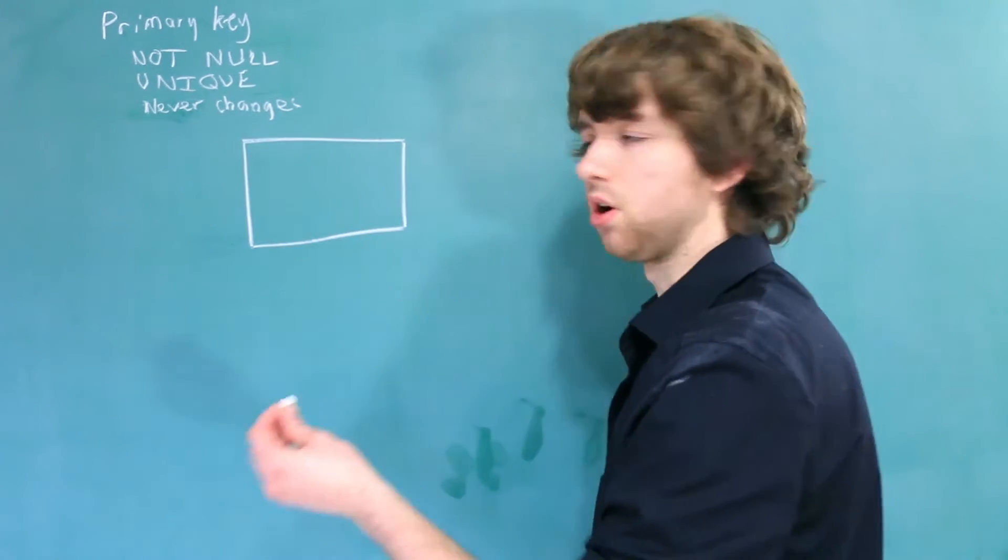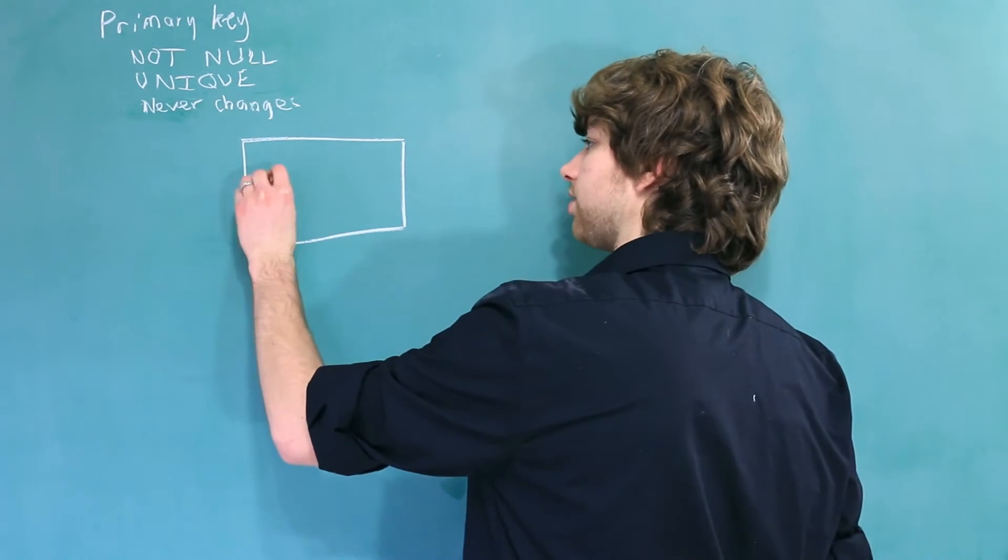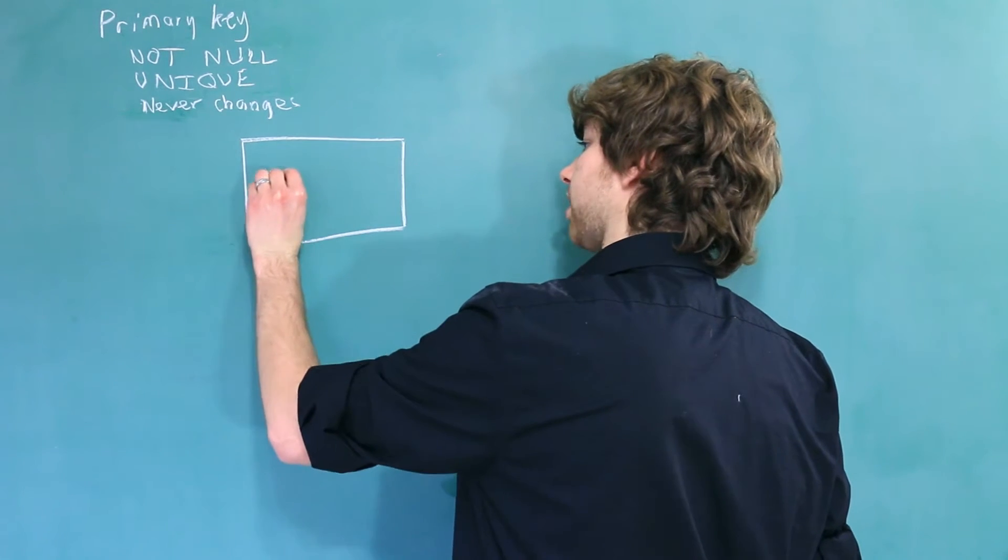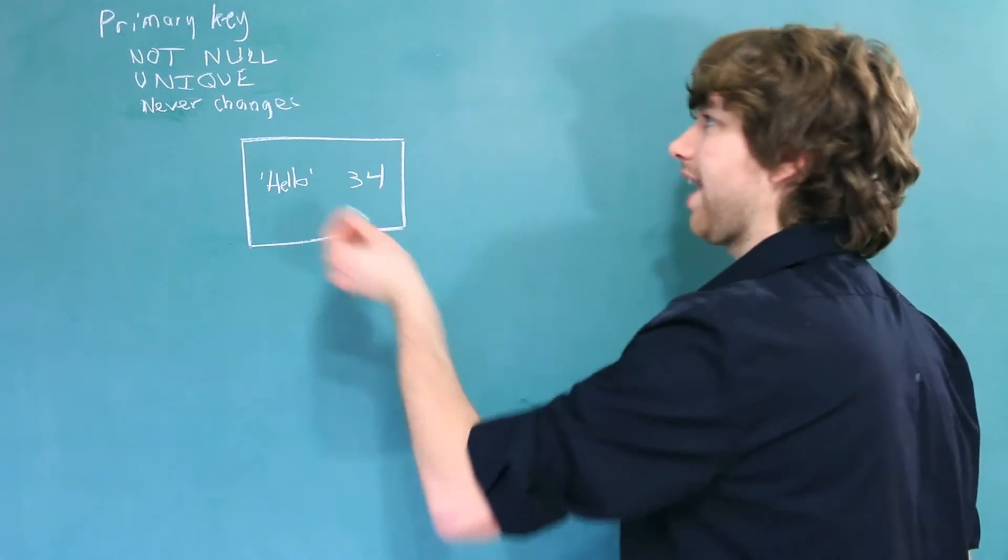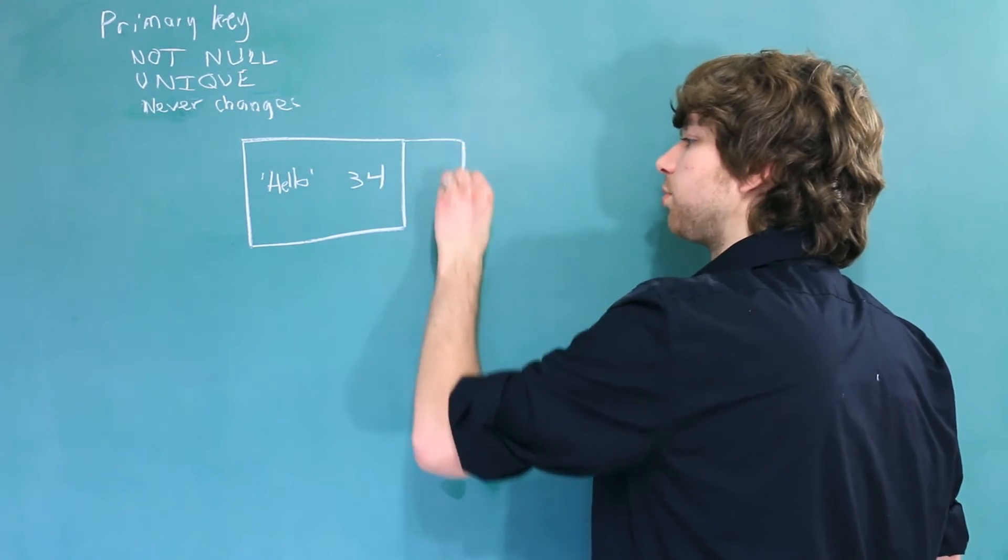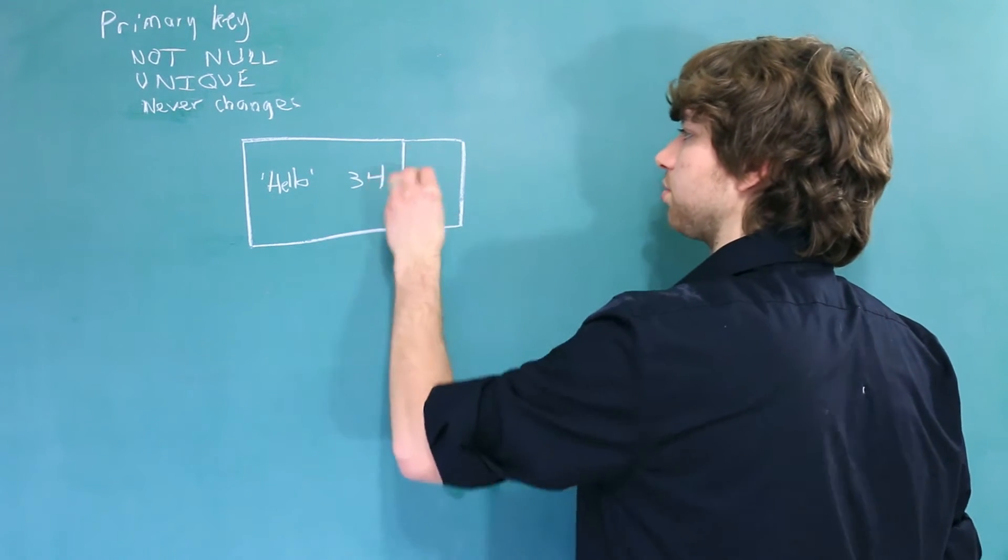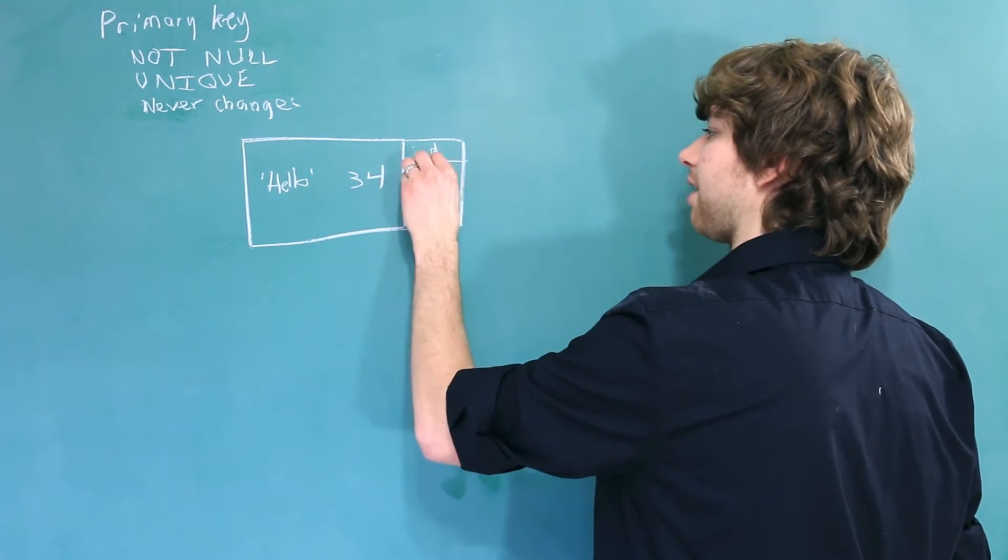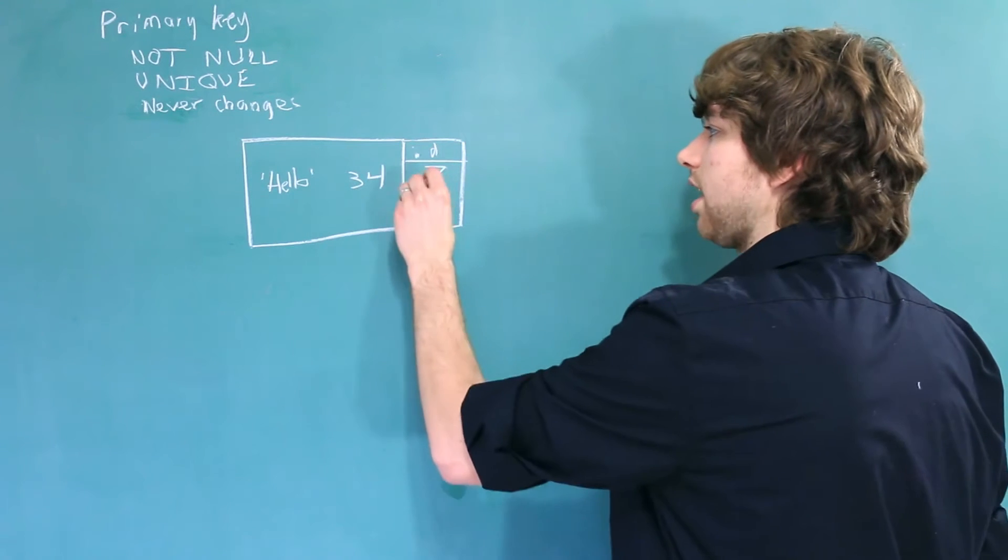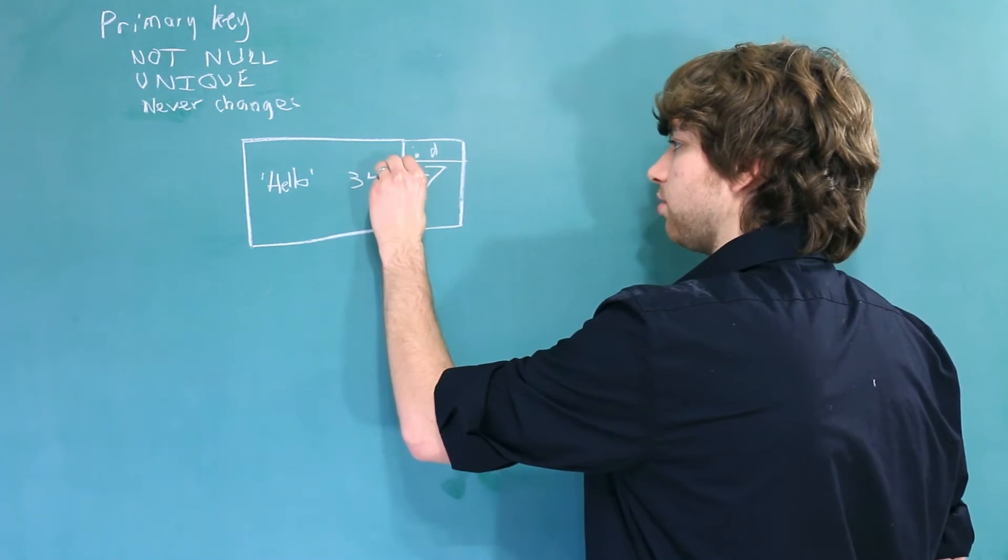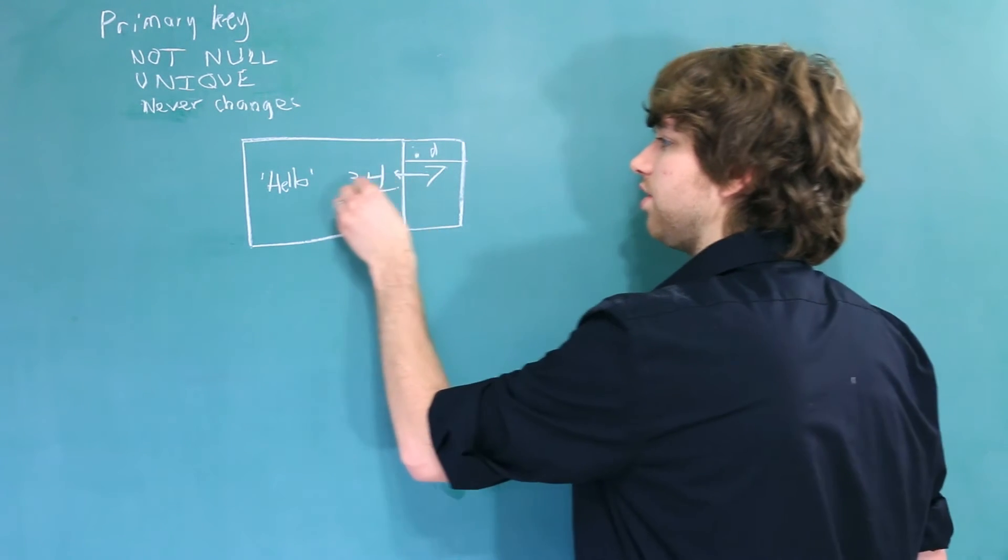Within a table, we have a couple columns. It doesn't matter what they are. Let's just say one's a string and one's a number, and then we add a primary key column. So we'll just use a number, so we'll say ID, and this will have the ID of 7. So you can tell that this ID points to a specific entity, this one right here.